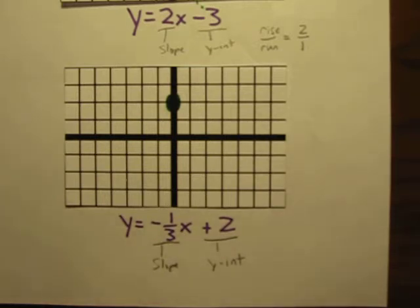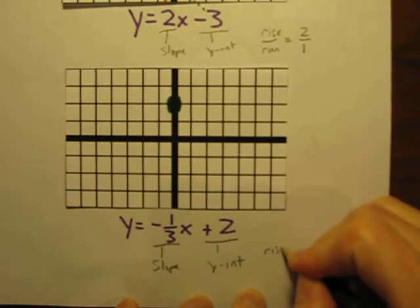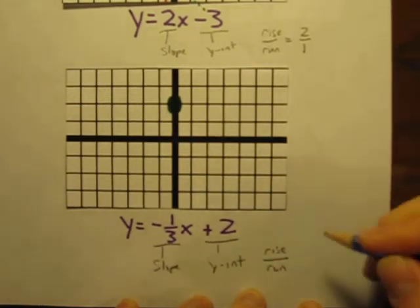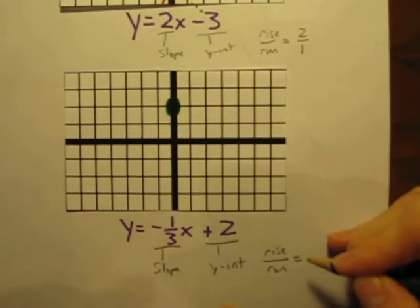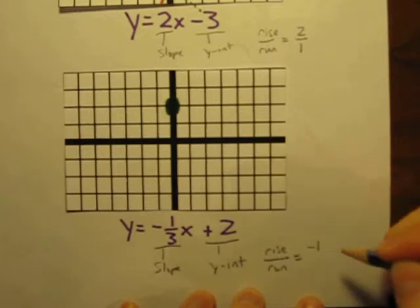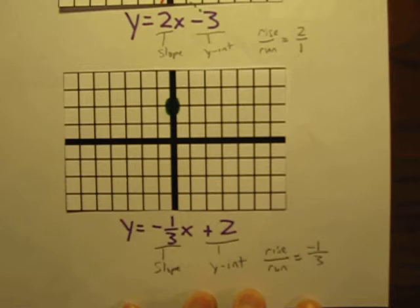Again, that's what our slope is telling us. Don't forget that our slope, of course, is always rise over run. And in this case, it's negative 1 over 3. So I'm going to put that negative sign with the 1, put this over 3.